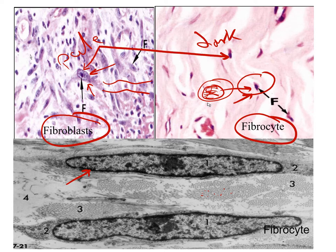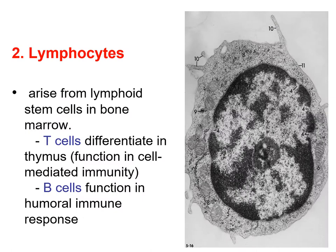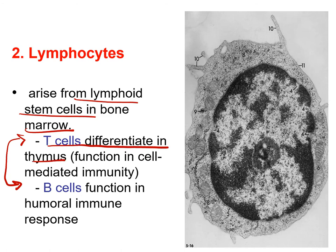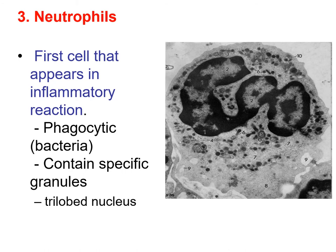The second cell we have is the lymphocyte. These are cells found in the blood that migrate toward the connective tissue and are responsible for the immune response. They arise from lymphoid stem cells found in the bone marrow. We have two types: T lymphocytes that differentiate in the thymus and are responsible for cell-mediated immunity, and B lymphocytes that function in the humoral immune response, which is the production of antibodies.